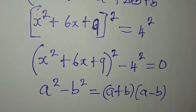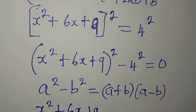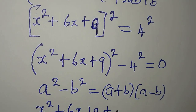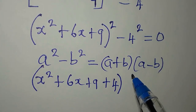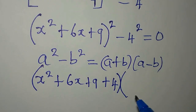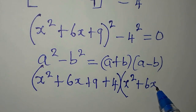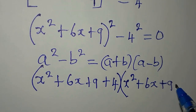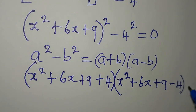So I'm going to apply the same thing. My a will be x squared plus 6x plus 9, then plus my b, which is 4, in the first bracket. In the second bracket we'll have x squared plus 6x plus 9, and our b is 4, so we have minus 4. Then we equate to 0.